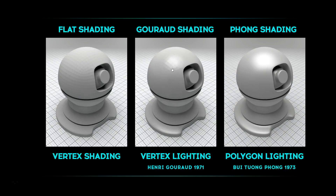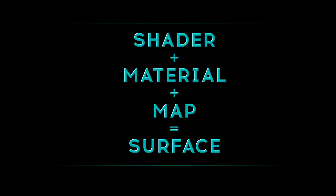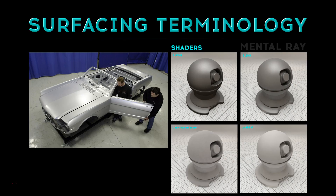The next big step was in 1973 when Bui-Tuong Phong invented Phong shading. Phong shading uses polygon lighting instead of vertex lighting, which solved the highlight faceting issue and gave a nice smooth surface with a smooth highlight. Those are the key stages of shading development, and once we got Phong shading we could move to the next stage of creating nice-looking objects. So again: shader, then material, then map, then surface.